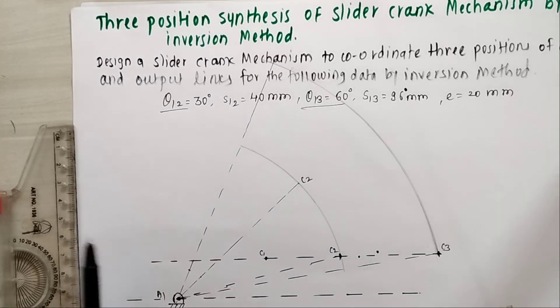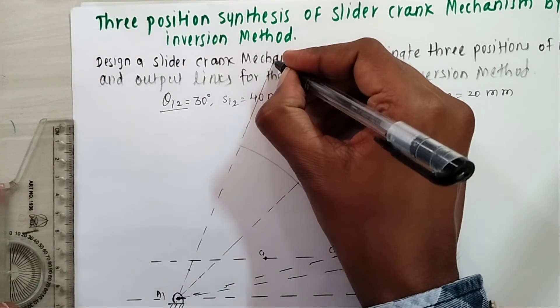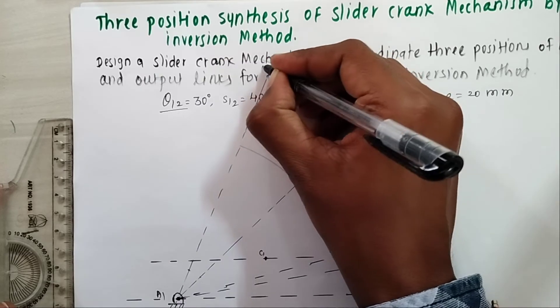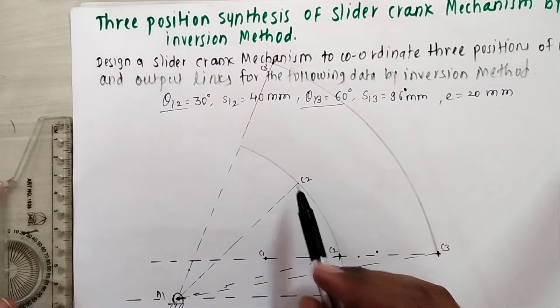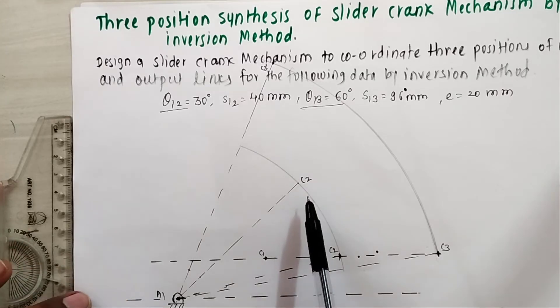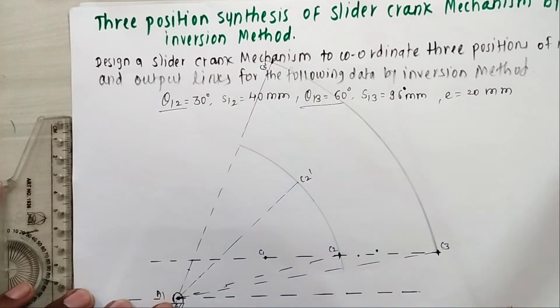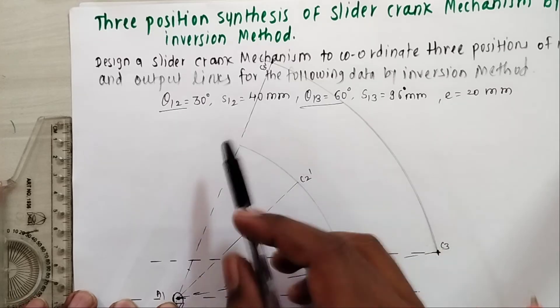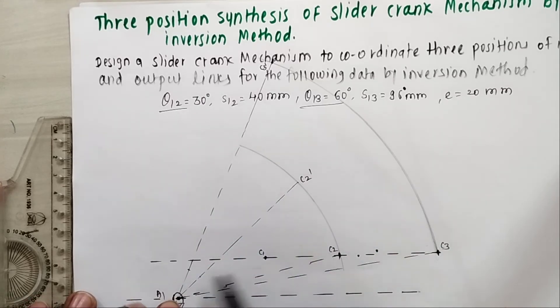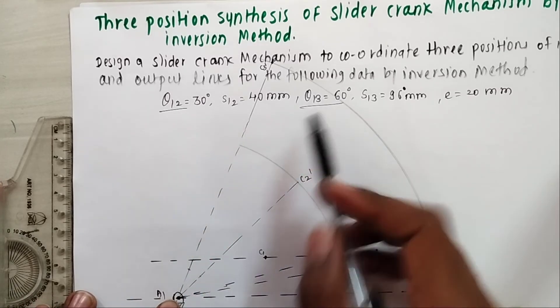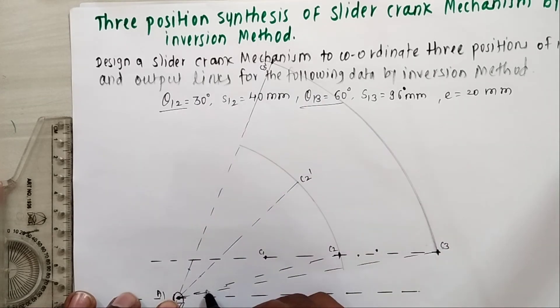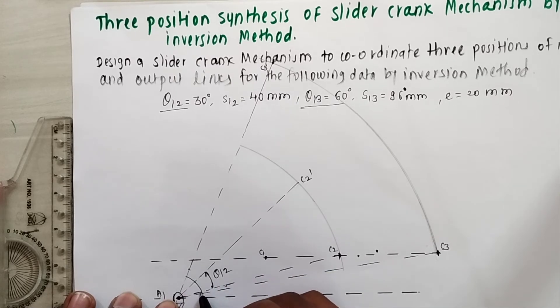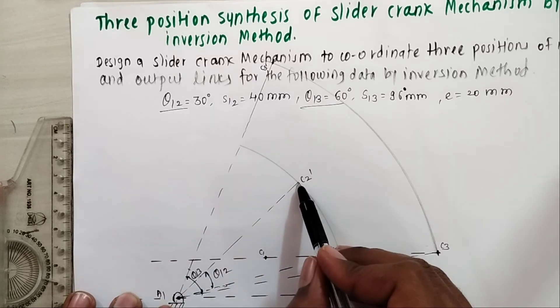This point is C3 dash. So I got C2 dash and C3 dash. To repeat: take angle θ12 from this A1C2, and take angle θ13 from this A1C3. This angle from A1C2 is θ12 and this one is θ13. When the arcs cut these angles, we get C2 dash and C3 dash.